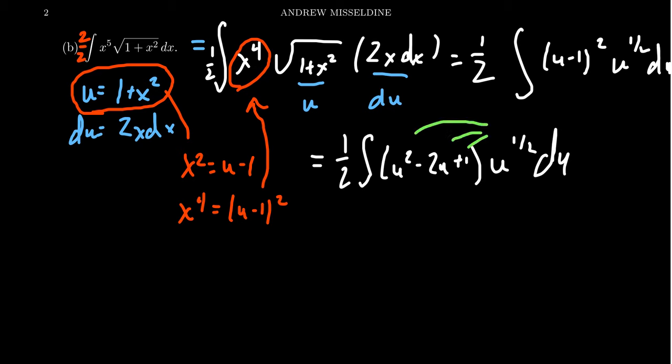And then you're going to get this polynomial-like expression. One half in front. You're going to end up with, so when you distribute the u to the one half, you're adding one half to each of the powers. So you're going to get u^(5/2) - 2u^(3/2) plus just u^(1/2) du. And those are things I can anti-differentiate, because I just have a combination of powers of u.